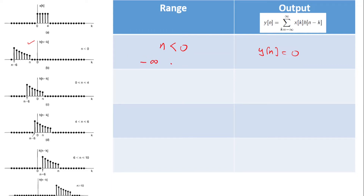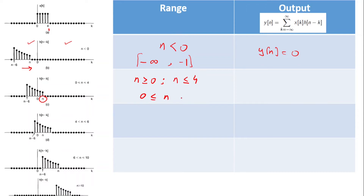Next, we consider n ≥ 0, moving away from negative values and crossing the zero boundary. We limit n to 4, because if n goes beyond 4, some values overlap and some do not, making a single clean summation impossible. So in the first overlap step, h[n−k] moves right past zero but its head is constrained to n ≤ 4, i.e., 0 ≤ n ≤ 4.